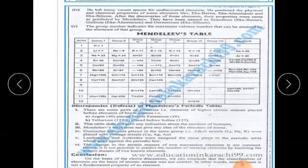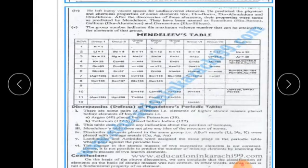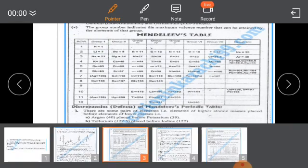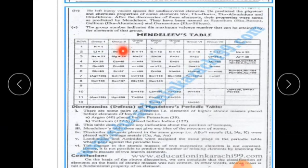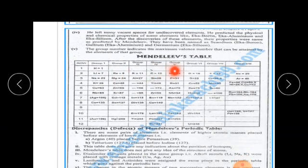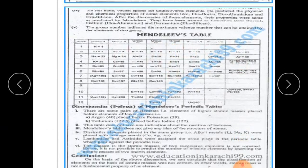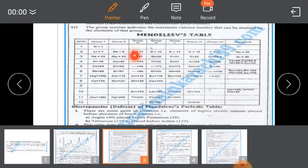The group number suggests the number of valence electrons. For example, elements in Group 1A like hydrogen and lithium have 1 electron in their outermost shell. Nitrogen has atomic number 7 and has 5 electrons in its outermost shell, so it is placed in Group 5.